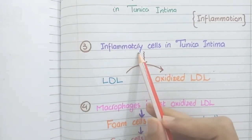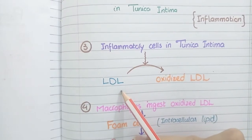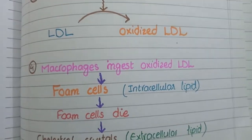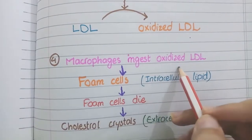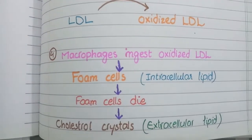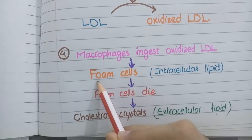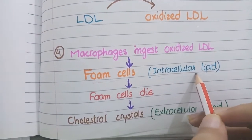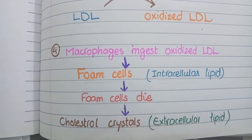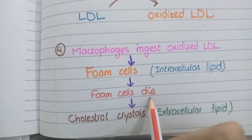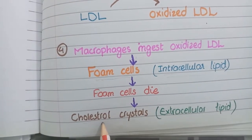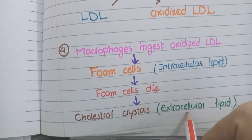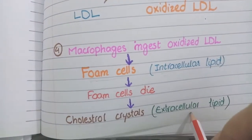When inflammatory cells have entered the tunica intima, they release reactive oxygen species that cause oxidation of LDL into oxidized LDL. Macrophages then ingest this oxidized LDL, resulting in deposition of lipid inside the macrophages, which appears as vacuoles — such macrophages are called foam cells. As lipid accumulates, some macrophages die and the cholesterol deposited inside them is released into the extracellular matrix as cholesterol crystals, representing extracellular lipid accumulation.